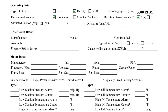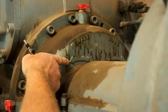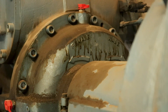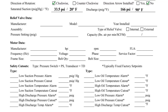This screw compressor has a distinct arrow indicating the correct rotational direction. The design saturated suction pressure is 33.5 psig, which corresponds to 20 degrees Fahrenheit, and the design discharge pressure is 166 psig at a condensing temperature of 90 degrees Fahrenheit.